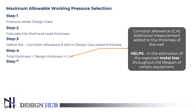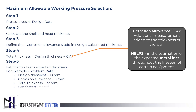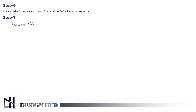Let us do one example for the calculation of the maximum allowable working pressure. The data is provided and we will convert every scalar quantity into inches. We will start calculating the maximum allowable working pressure. To find the total thickness, subtract the corrosion allowance of 0.125 inches from the nominal allowance of 1 inch. You will get a total thickness equal to 0.875 inches.